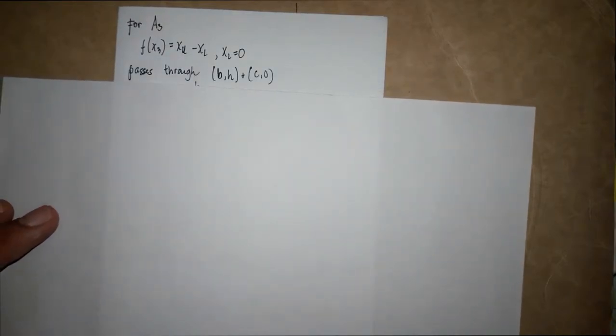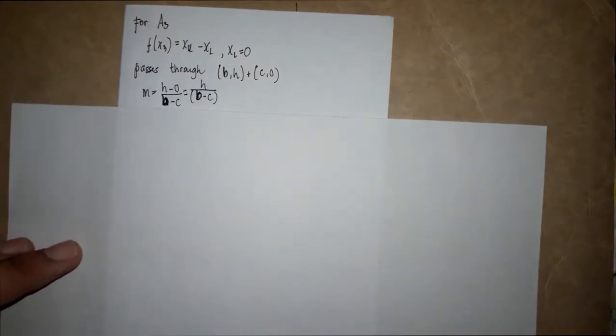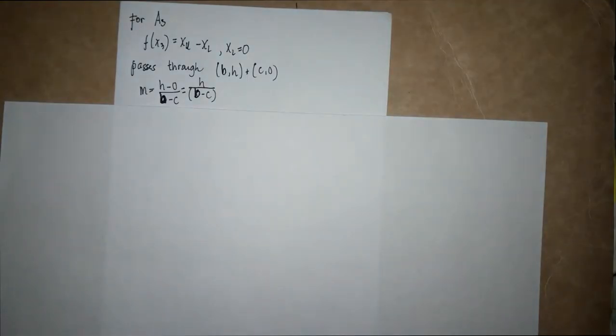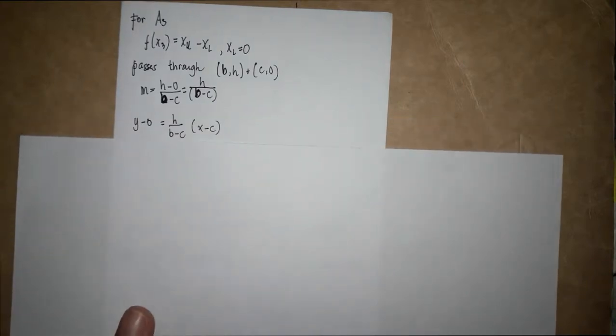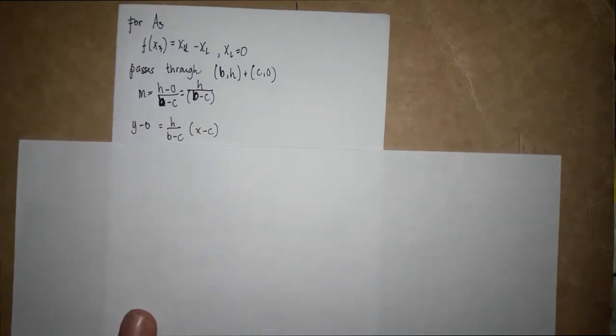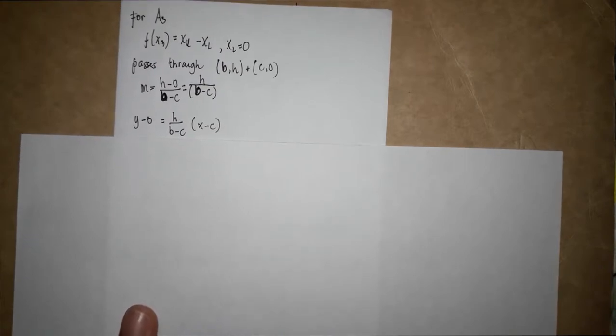For A3, f(x3) is equal to x upper minus x lower, wherein x lower is equal to zero, and it passes through the points (b, h) and (c, 0). So the slope is equal to h minus zero over b minus c, which is equal to h over (b minus c), and y is equal to h over (b minus c) times (x minus c).